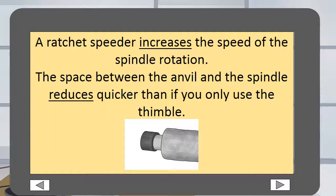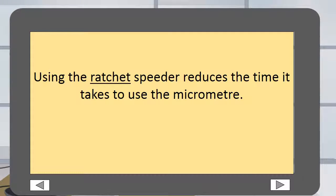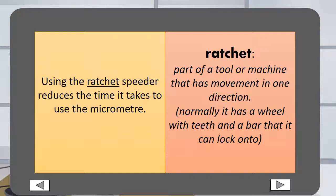A ratchet speeder increases the speed of the spindle rotation. The space between the anvil and the spindle reduces quicker than if you only use the thimble. Increase means to make bigger or faster. Reduce means to make smaller or slower. A ratchet speeder reduces the time it takes to use the micrometer. A ratchet is a part of a tool or machine that has movement in one direction, normally with a wheel with teeth and a bar that it can lock onto.